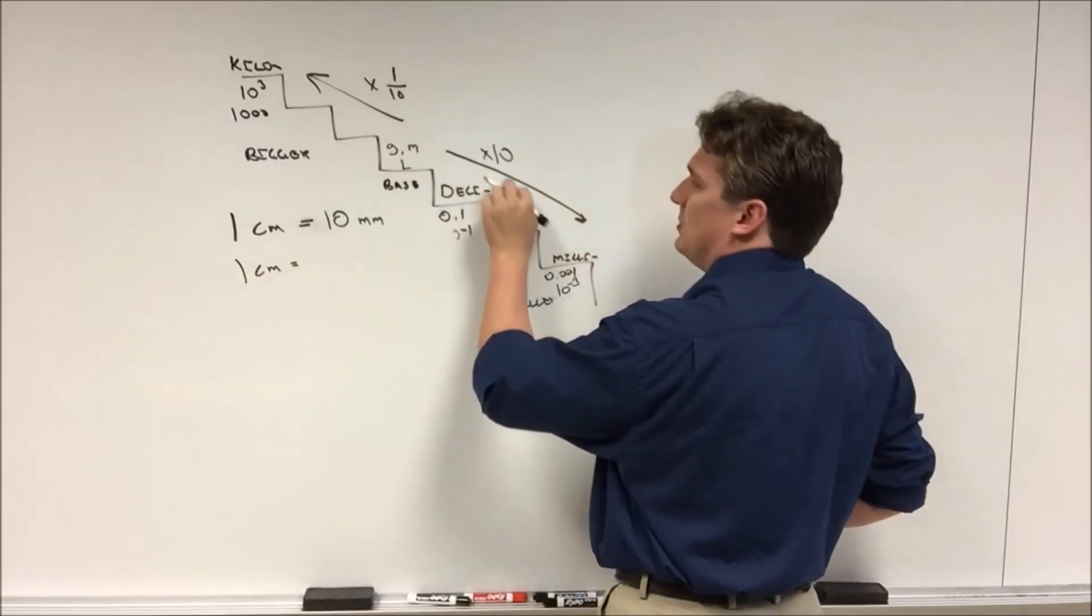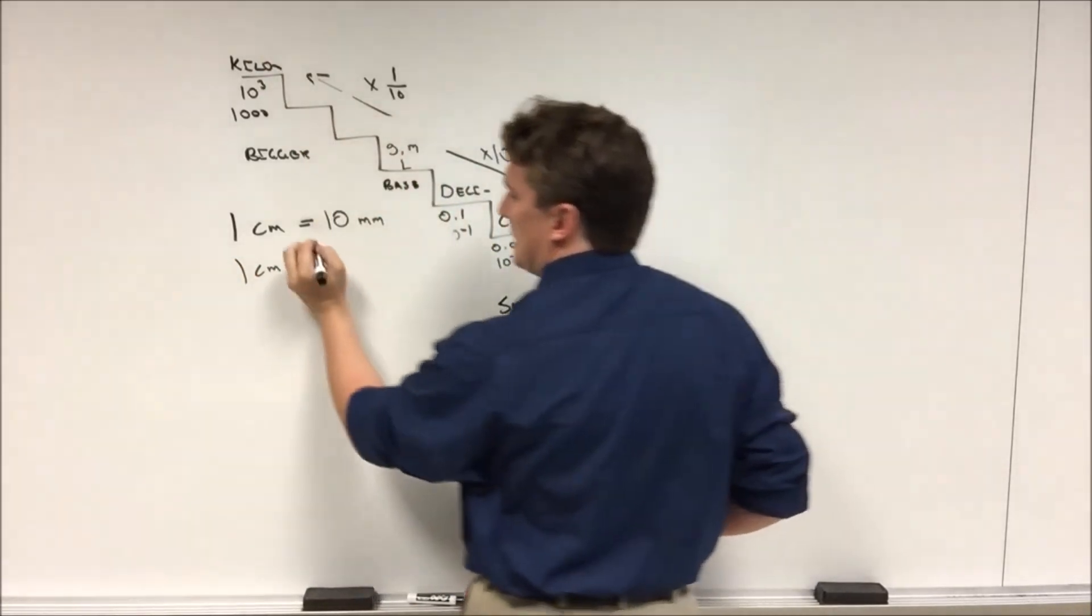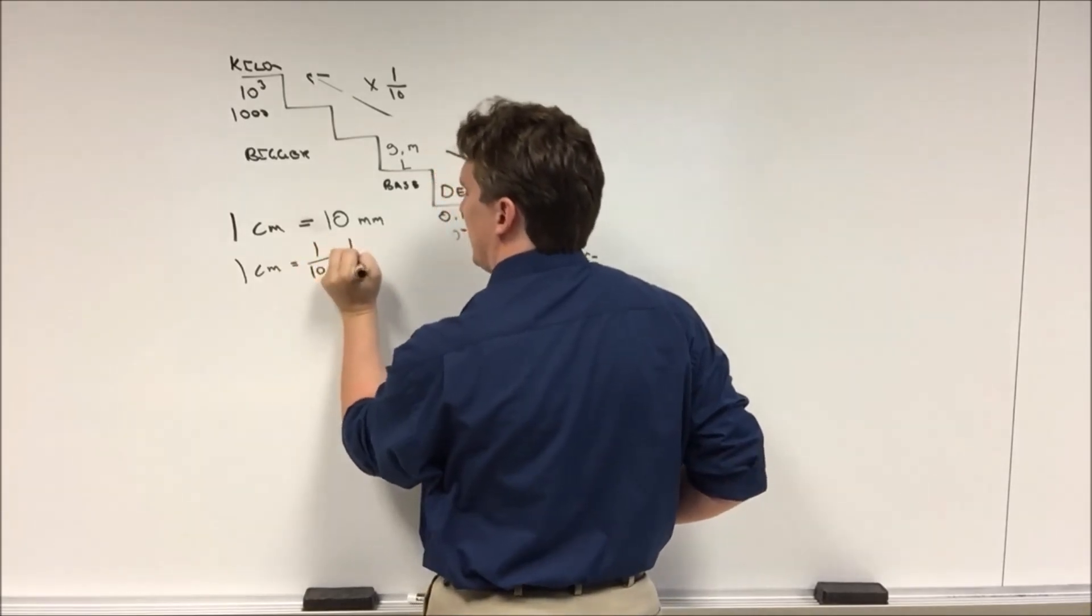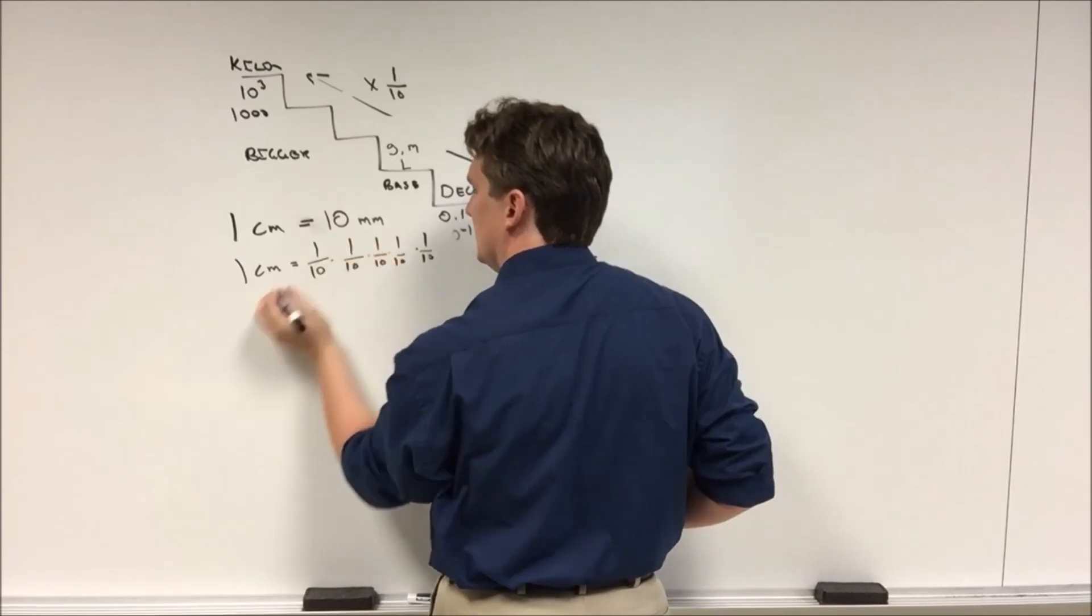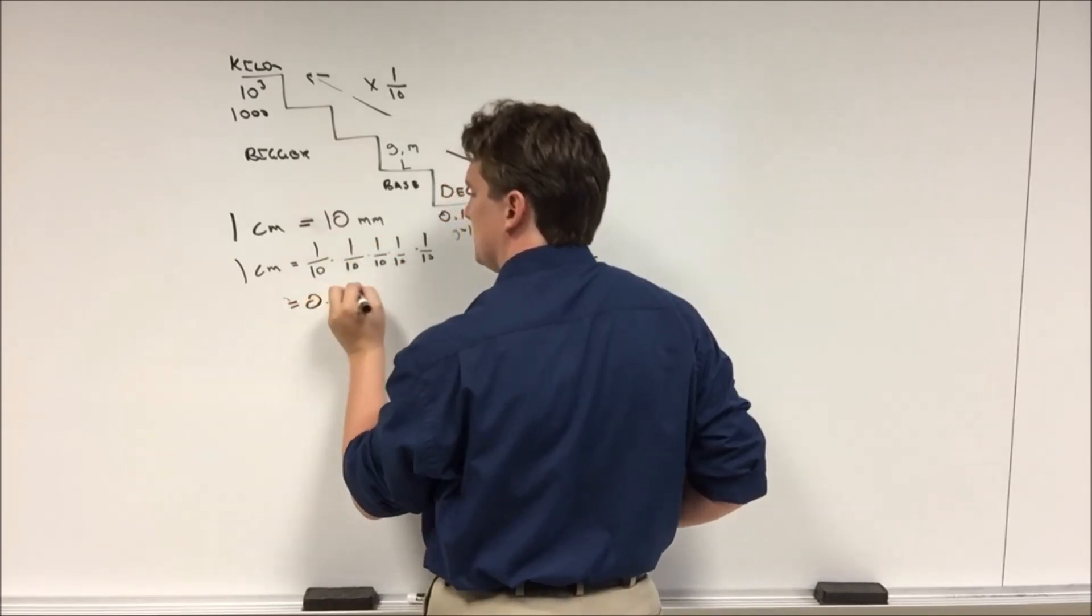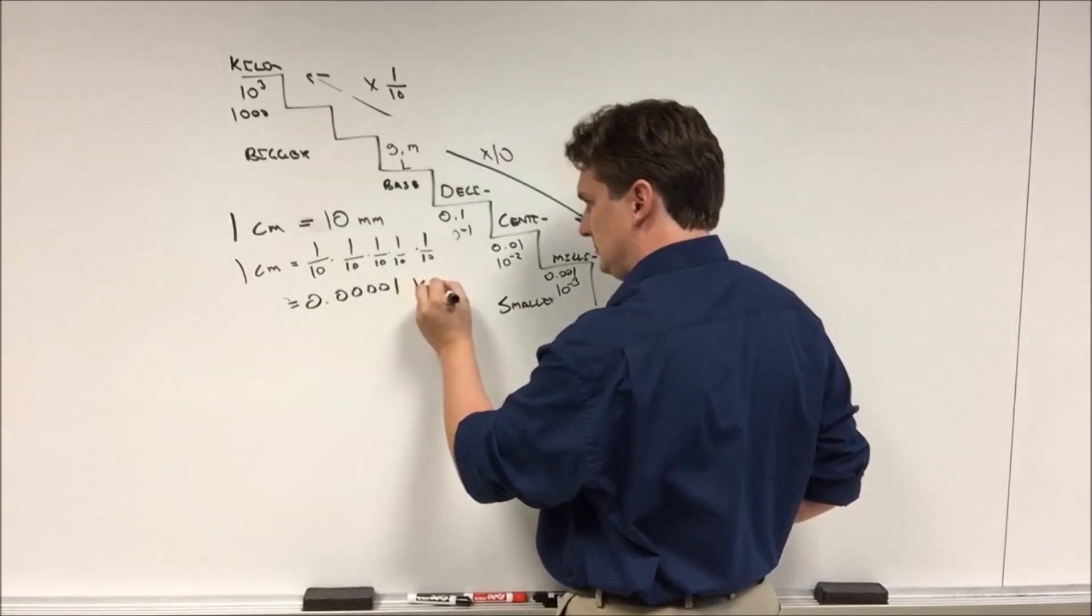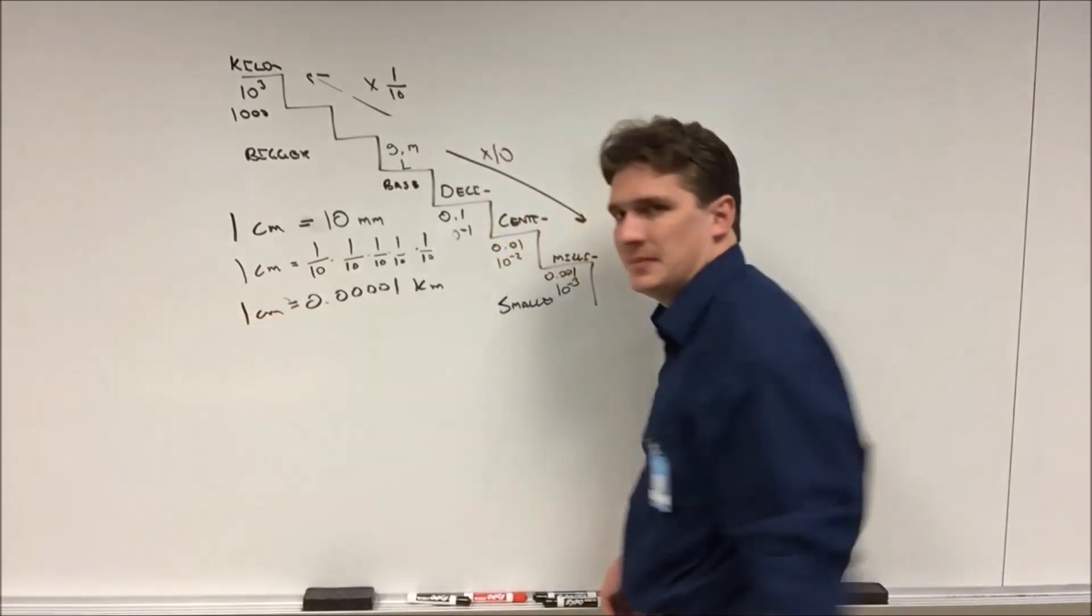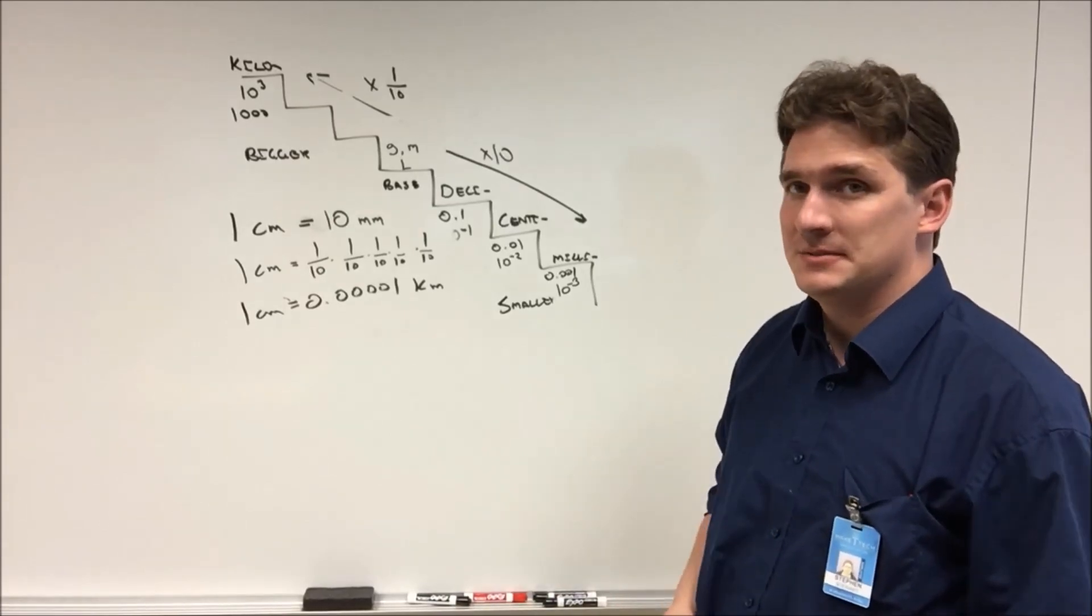Also, if we have one centimeter, we have one, two, three, four, five steps. So we're going to multiply by 1 over 10 five times. And this will give us 0.00001 kilometers in every centimeter. That's how you build up your conversion factors for the metric system.